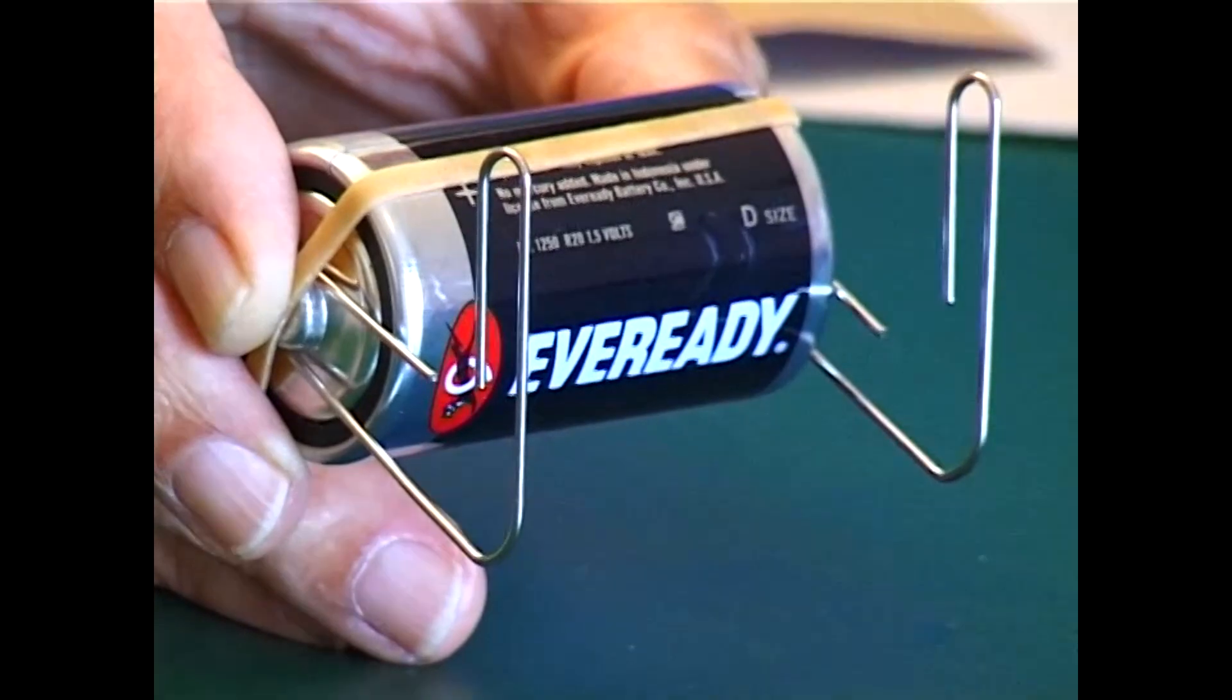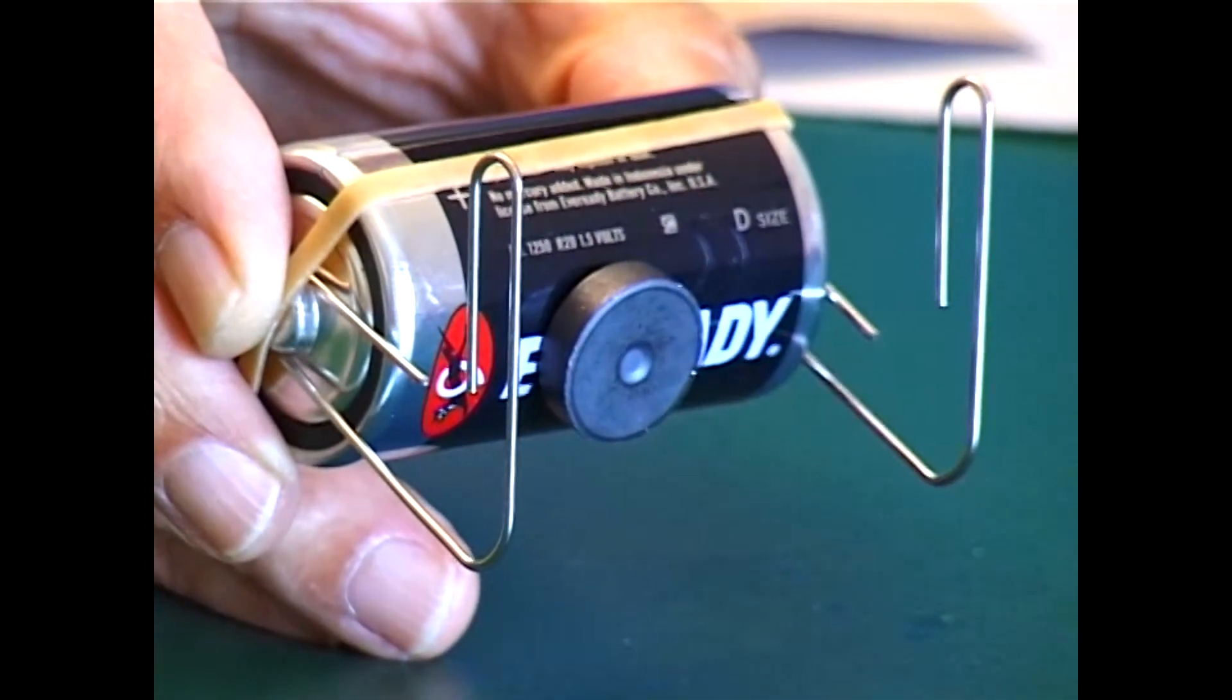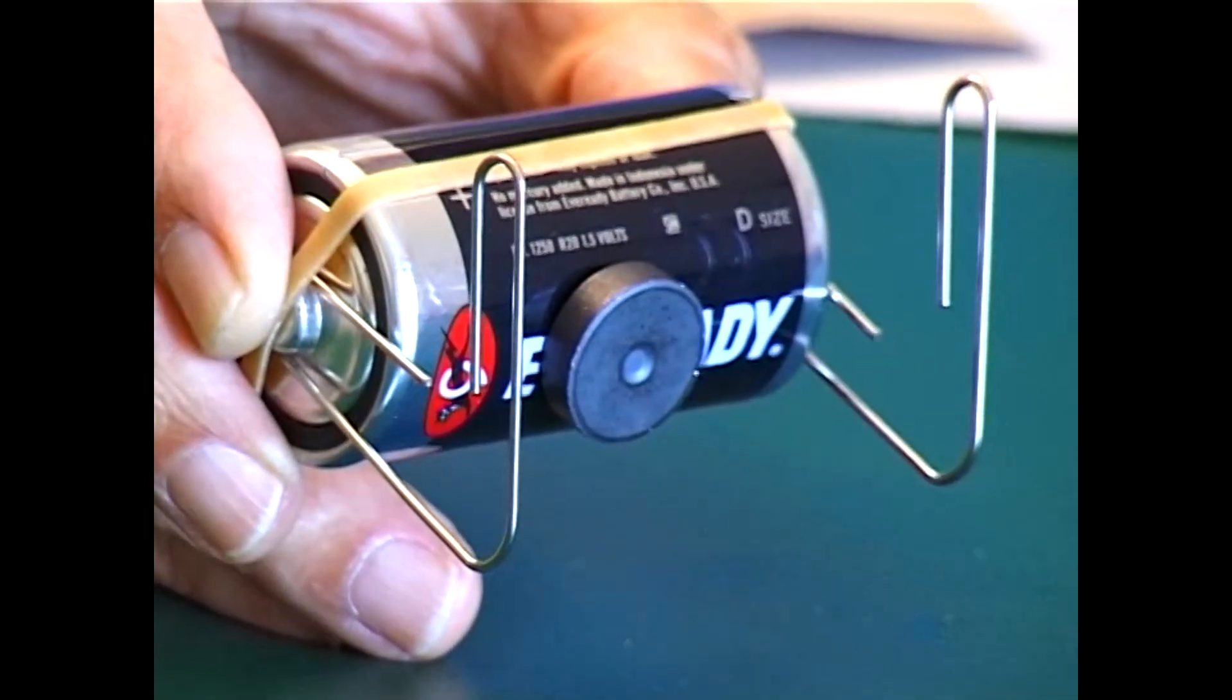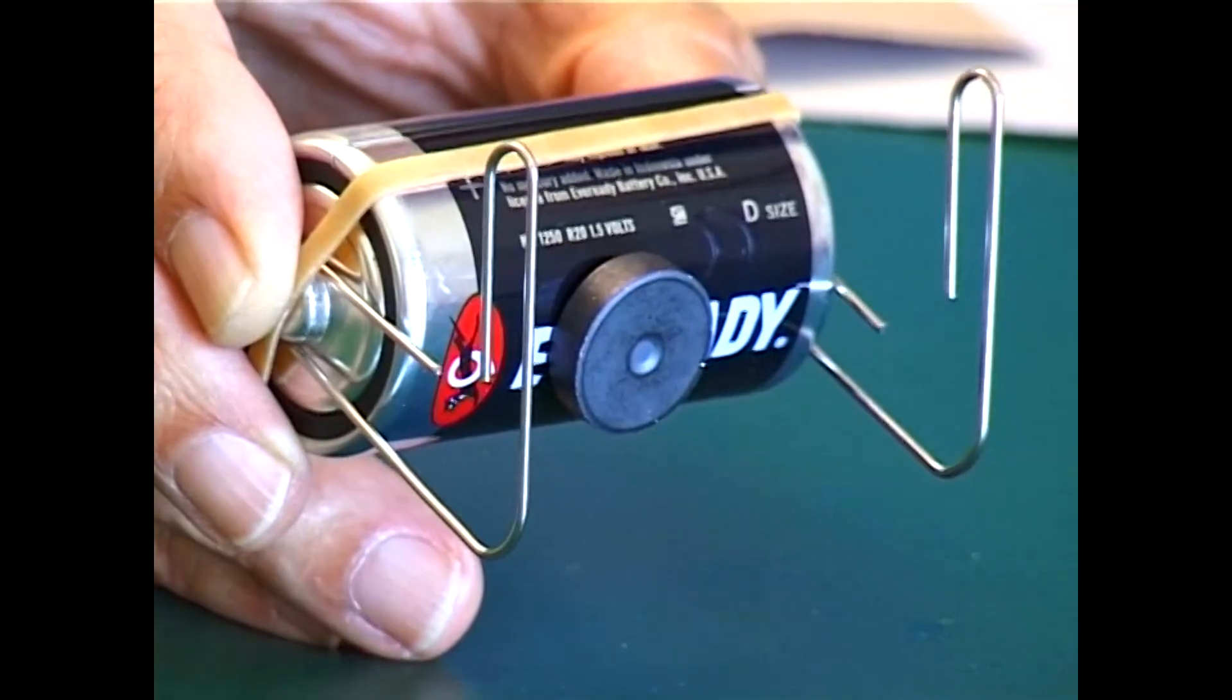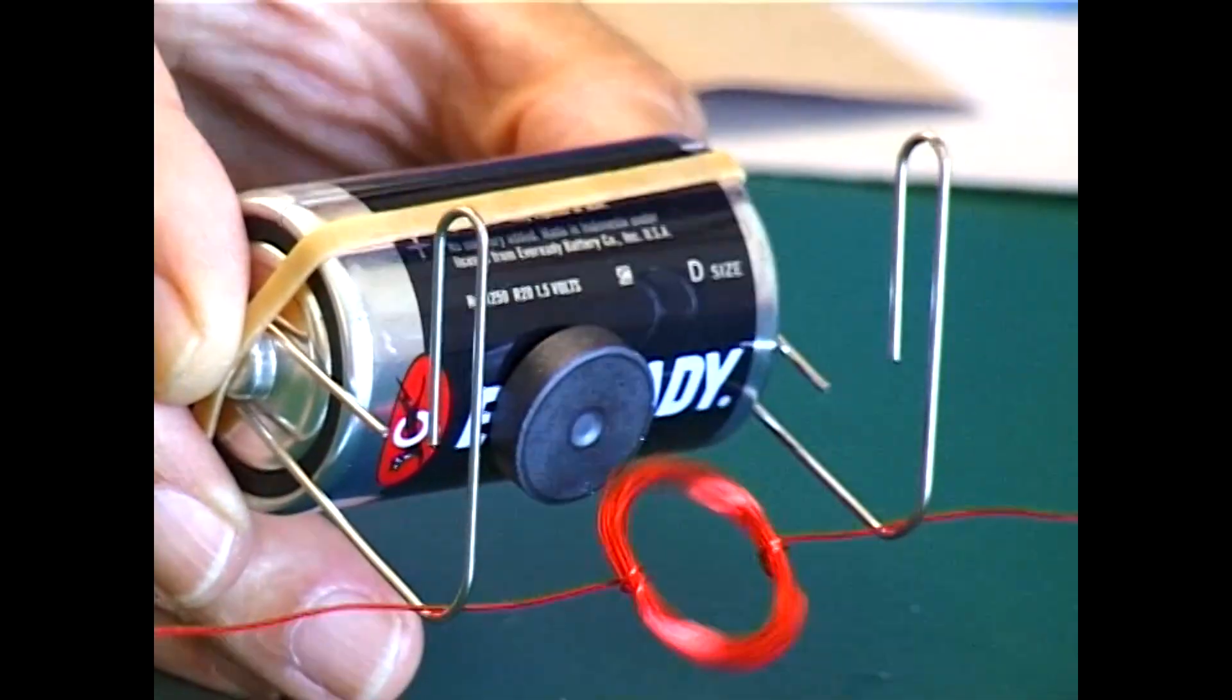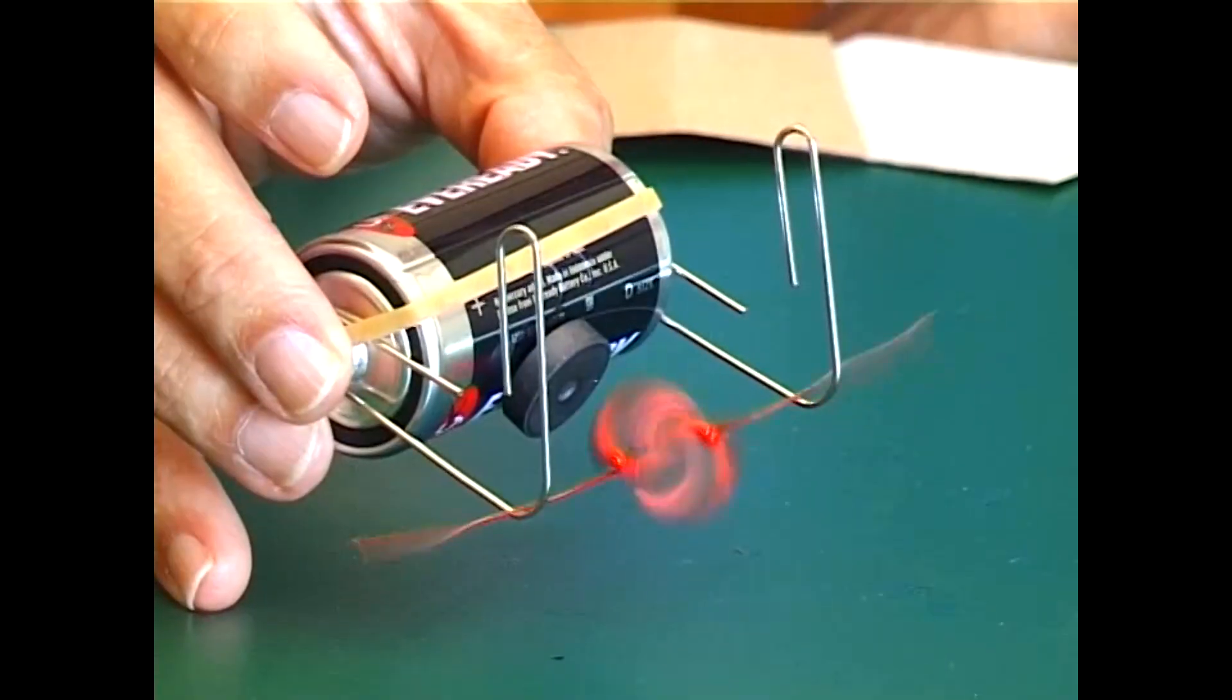Two more things need to be done. I'm taking the disc magnet and placing it on the side of the battery. It sticks there because the battery case is made of steel. Now here comes the copper wire coil. I'm going to drop that down onto the supporting paper clips and immediately it starts rocking and then spinning.